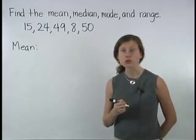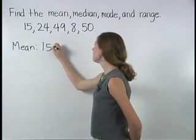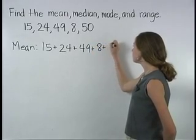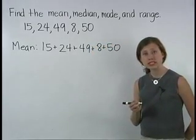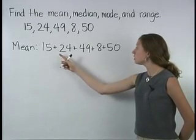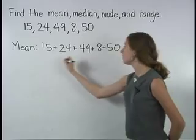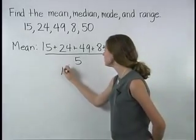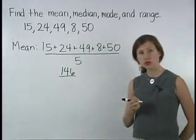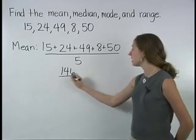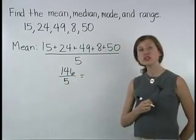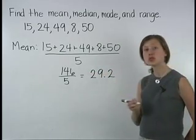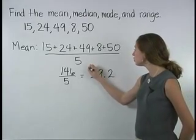let's begin by adding the numbers. So we have 15 plus 24 plus 49 plus 8 plus 50. This will be divided by how many numbers are in the set, which is 5. Adding the numbers, we get 146. 146 divided by 5 is equal to 29.2. So the mean of the set of data shown here is 29.2.